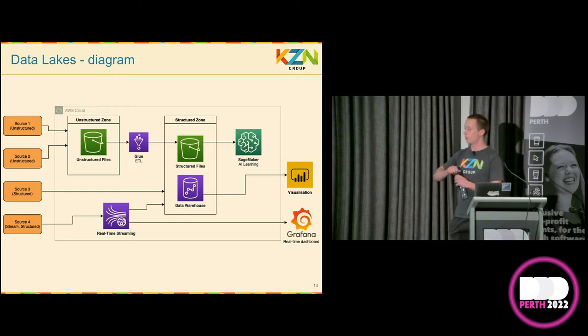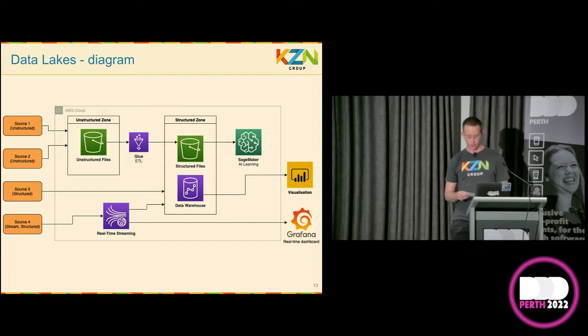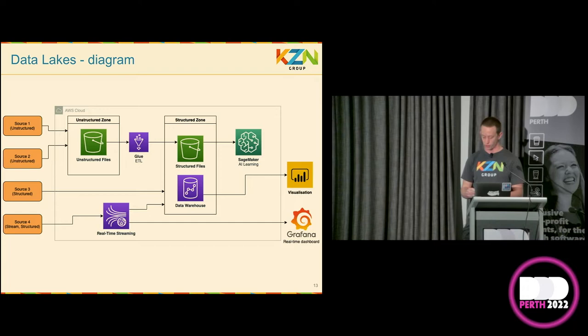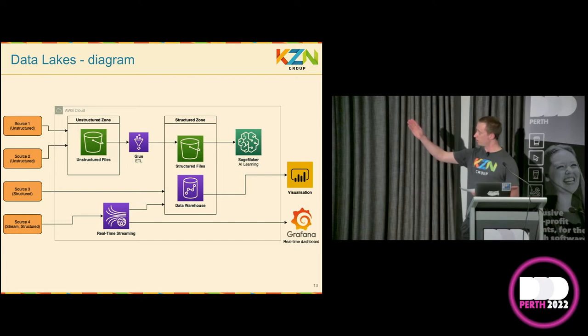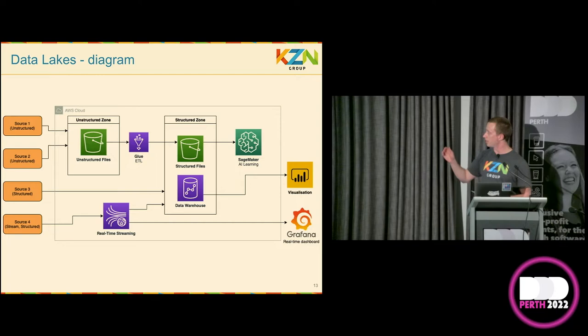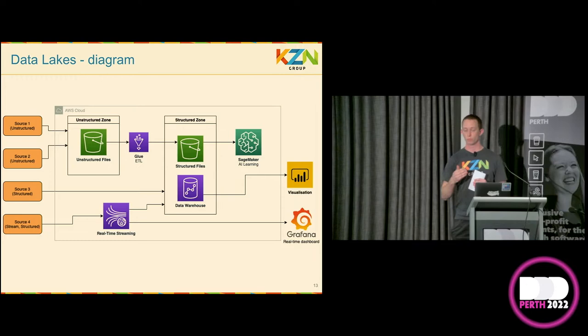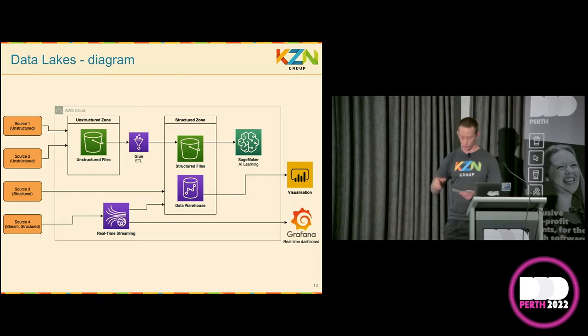Everyone loves AWS architecture diagrams, so I threw one in. Let's walk through it step-by-step. First, on the left, we have a range of data sources — some unstructured, some structured. That's the key difference between a data warehouse and a data lake: all inputs are accepted. You'll notice there are two zones: an unstructured zone and a structured zone. It's very important we have both of these so that we can accept data from outside systems, and as we move data through a data lake, it becomes more structured and has a higher quality.